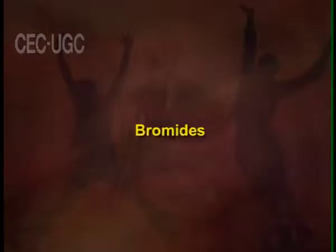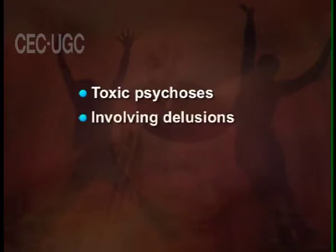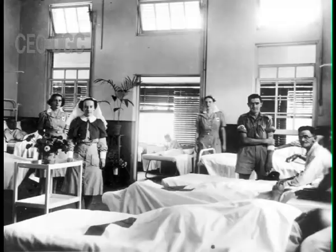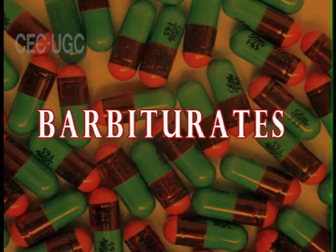Early in the 1850s, bromides became popular as sedatives and were used by millions of people, closely followed by abuse. Excessive consumption of bromides resulted in toxic psychosis involving delusions, hallucinations, and neurological disturbances, and admissions into mental hospitals skyrocketed. Misuse of bromides waned in the 1930s and was replaced by barbiturates, which have legitimate uses but are extremely dangerous drugs associated with serious physiological and psychological dependence.